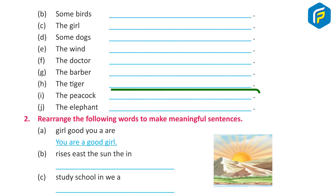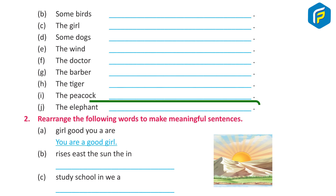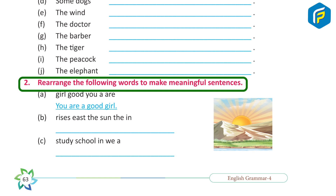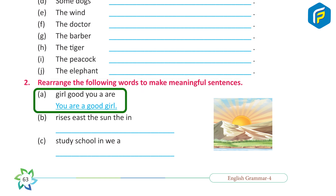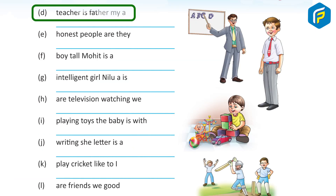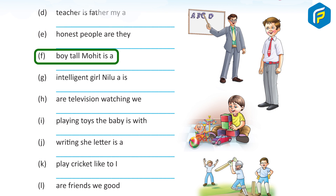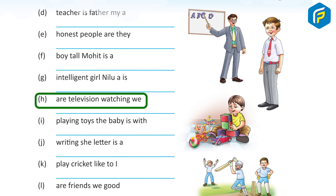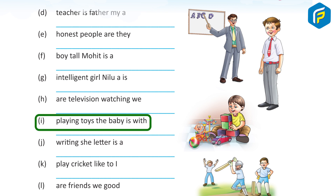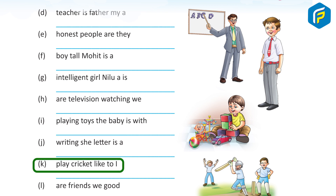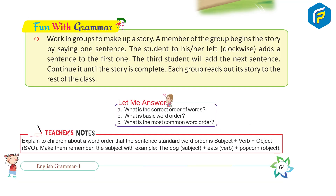G) He went to get his hair trimmed by the barber. H) Tigers are night hunters. I) The peacock has fine feathers. J) The elephant is the world's largest living creature. Practice two: Rearrange the following words to make meaningful sentences. A) You are a good girl. B) The sunrise is in the east. C) We study in a school. D) My father is a teacher. E) They are honest people. F) Mohit is a tall boy. G) Neeloo is an intelligent girl. H) We are watching television. I) The baby is playing with the toys. J) She is writing a letter. K) I like to play cricket. L) We are good friends.